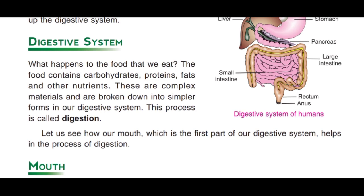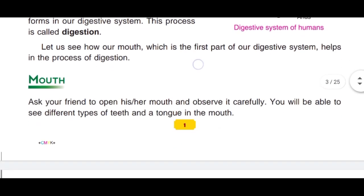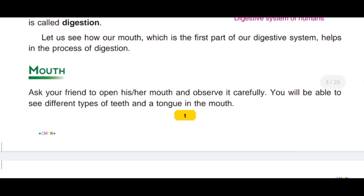Let us see how our mouth, which is the first part of our digestive system, helps in the process of digestion. Ask your friend to open his mouth and observe it carefully. You will be able to see different types of teeth and a tongue in the mouth.